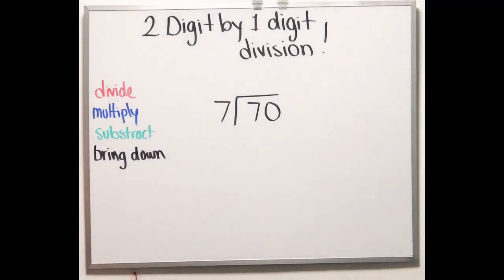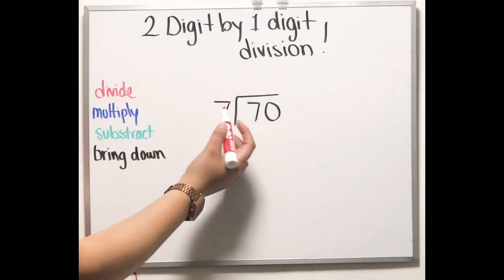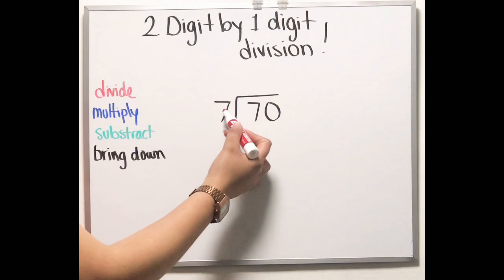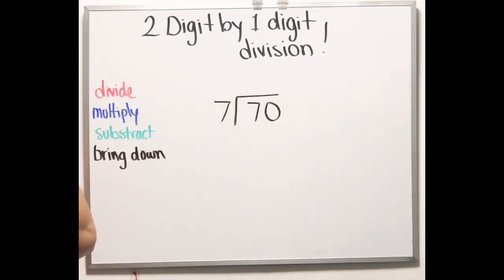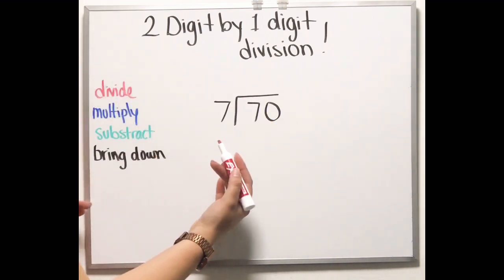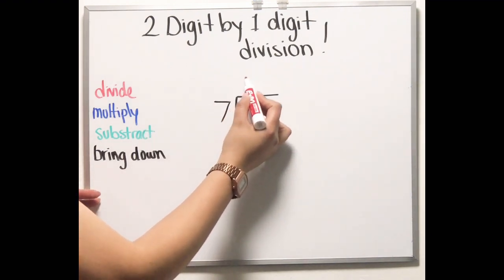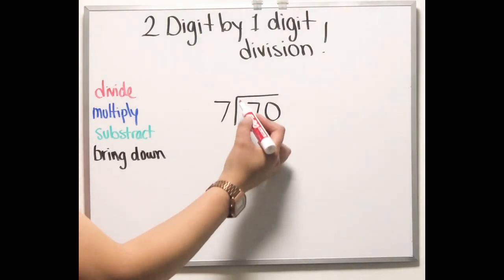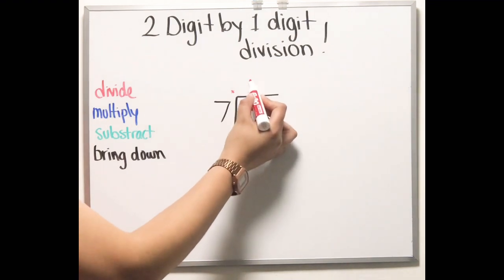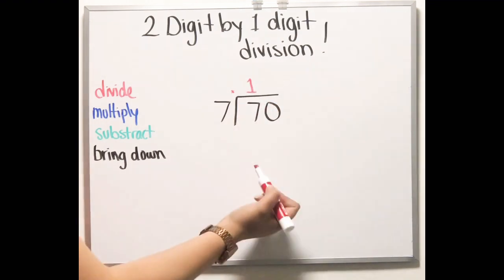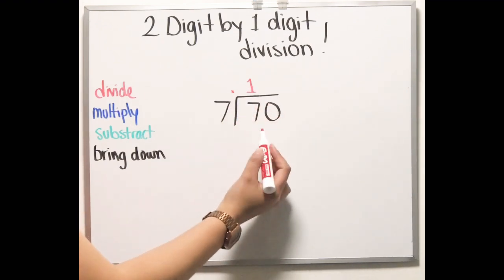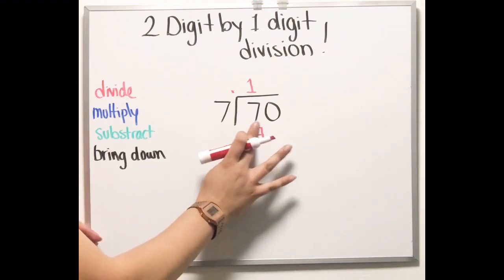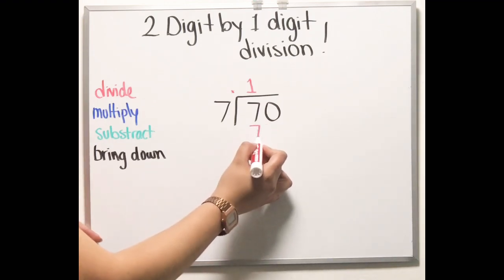For the first step — divide — you're going to see how many times can the 7 go into the 7. Think: 7 multiplied by what will give me 7? If you think of your facts, 7 times 1 will give me 7. So 7 times 1, then you put the result of your multiplication, which is 7, up here.